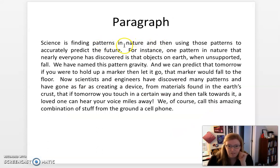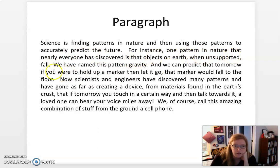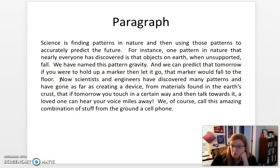And that is this paragraph right here. It says: science is finding patterns in nature and then using those patterns to accurately predict the future. For instance, one pattern in nature that nearly everyone has discovered is that objects on earth, when unsupported, fall. We have named this pattern gravity. And we can predict that tomorrow, if you were to hold up a marker and then let it go, that marker would fall to the floor. You knew that, I bet. Still true tomorrow and the next day.